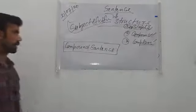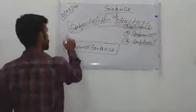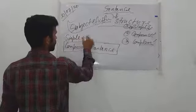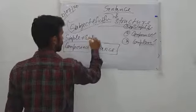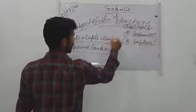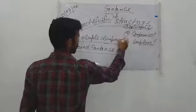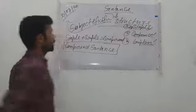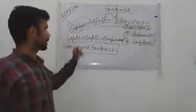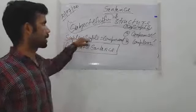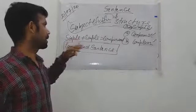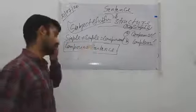But compound sentence — simple plus simple is equal to compound. The definition: when minimum two simple sentences are joined with the coordinating conjunction, then it is a compound sentence.